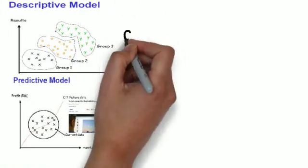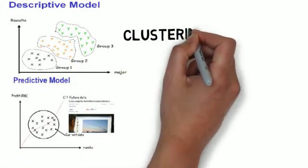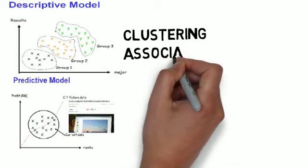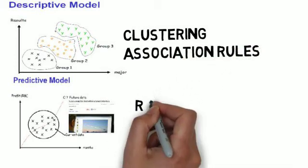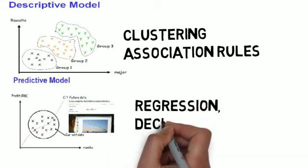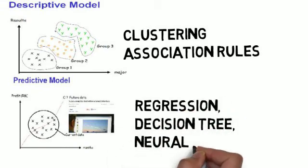Within the descriptive modeling, we are going to learn about what is clustering and what is association rules. And in the predictive modeling, we are going to learn about what is regression, decision tree, and also neural networks.